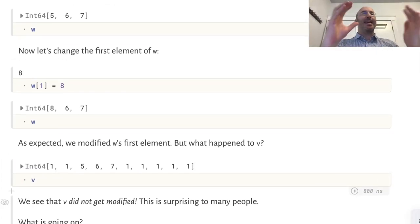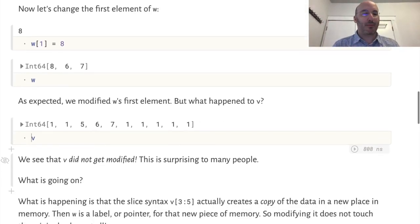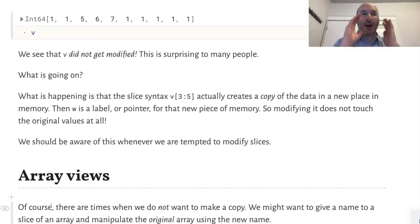This is a key thing to remember. When we take a slice of an array and give it a name, that is actually making a copy of the data. There's a new copy of those three elements somewhere else in memory, and w is referring to that copy. When we modify that copy, the original does not get modified. You have to remember that when we make a slice like this, it makes a copy and will not modify the original array.